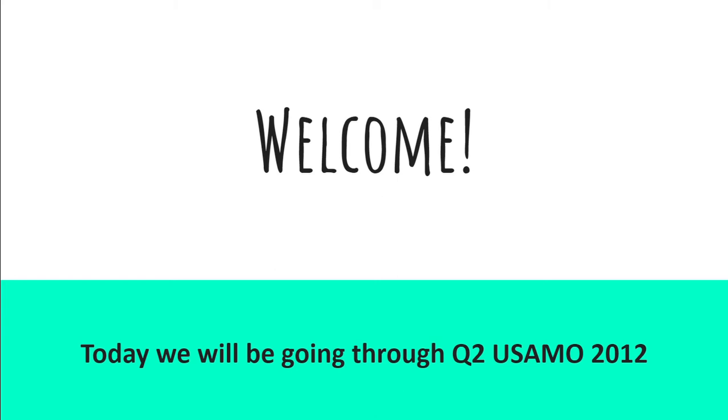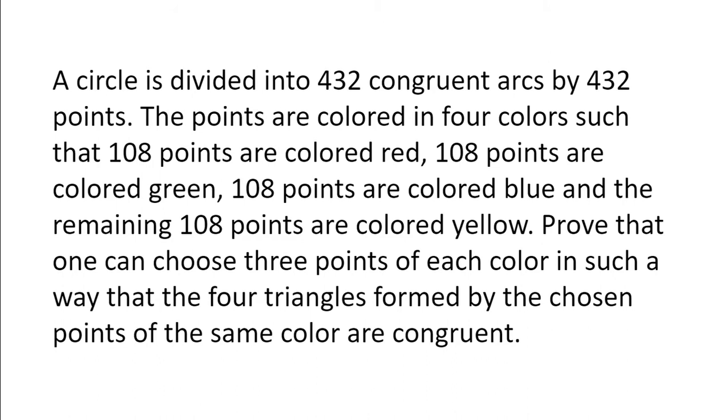Welcome. Today we will be going through question 2 of the USAMO 2012. A circle is divided into 432 congruent arcs by 432 points.